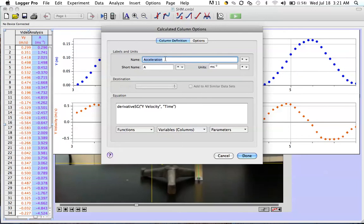And I labeled the name of the column as acceleration, the short name being A, and then its unit says meters per second. And then here in this box is where we enter our calculation for whatever we want the column to be. Now since I was wanting acceleration, I know that the derivative of velocity and time will give me acceleration.